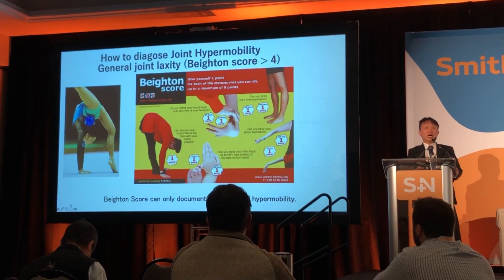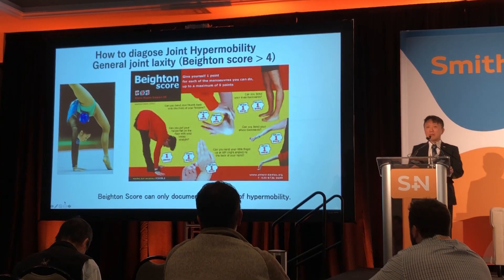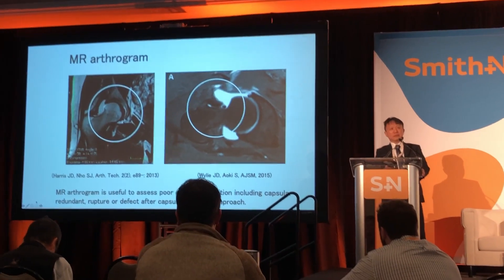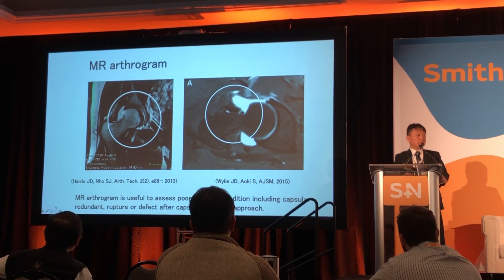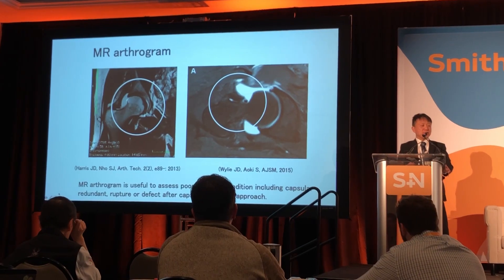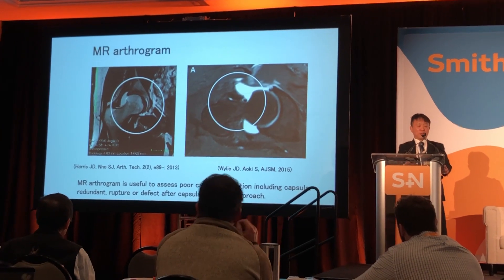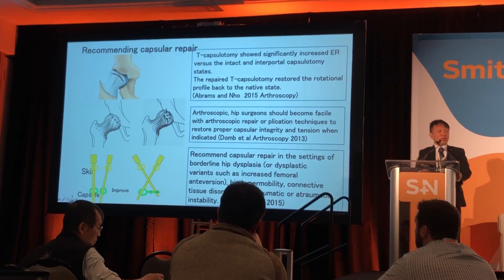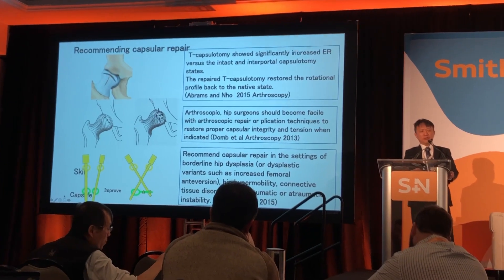How do we diagnose joint hypermobility? The Beighton score documents the degree of hypermobility, and physical examination is really important — though Dr. Chuck talked extensively about physical examination yesterday, so I will skip some of that. MRI is also a useful algorithm to assess capsular conditions, including capsular redundancy, rupture, or defect after capsular releasing approaches. Previous speakers also emphasized that capsular repair is strongly recommended.